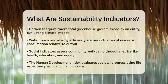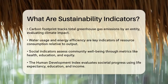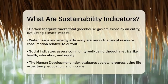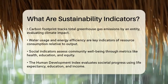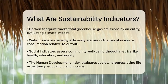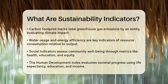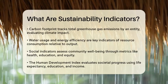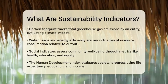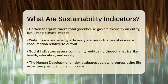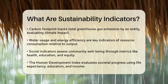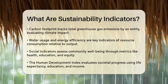Social indicators assess the social well-being of a community. These include metrics like health, education, and equity. For instance, the Human Development Index combines life expectancy, education, and income per capita to evaluate overall societal progress.